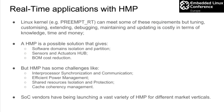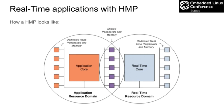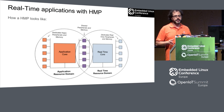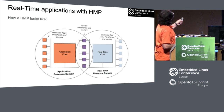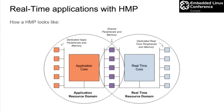SoC vendors are investing a lot in these new hybrid architectures for different market verticals. In a typical hybrid multiprocessing top-level view, on the left side we have our application core — Cortex-A — with its dedicated apps, peripherals, and memories. On the right side, our real-time core with its dedicated real-time applications, peripherals, and memory. We also have shared resources like peripherals and memory to exchange data between these two cores.